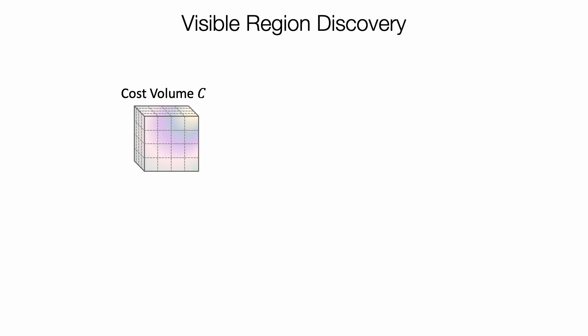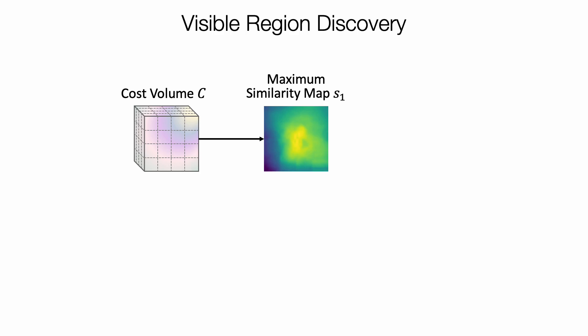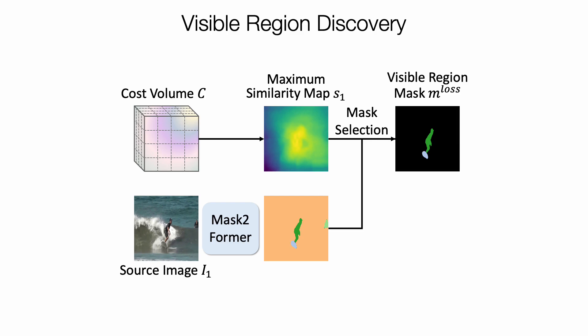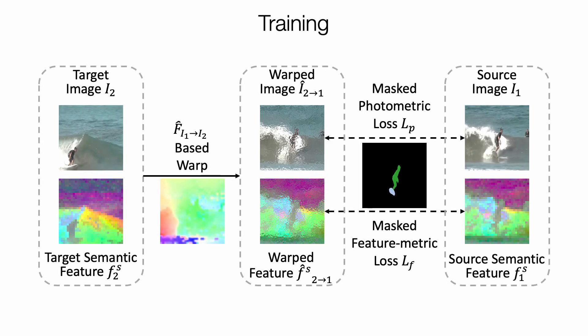One issue with warping-based loss is that sometimes there does not exist a matching for some pixels on one image due to factors like occlusion. To address this, we introduce a visible region discovery technique to find regions that appear in both images. We first extract a maximum similarity map containing the maximum similarity of each pixel on the source image. Then we use an off-the-shelf panoptic segmentation model to extract object-level regions and select regions with the highest average maximum similarity. The selected regions are used as a visible region mask, and we apply the photometric and feature-metric loss only on the positive regions of the visible mask.